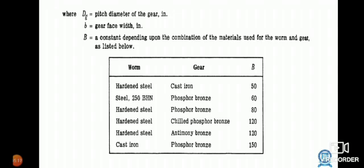Worm made by hardened steel with gear made by phosphor bronze has β value 80. Hardened steel with chilled silver bronze has β value 120. Hardened steel with antimony bronze has β value 120.